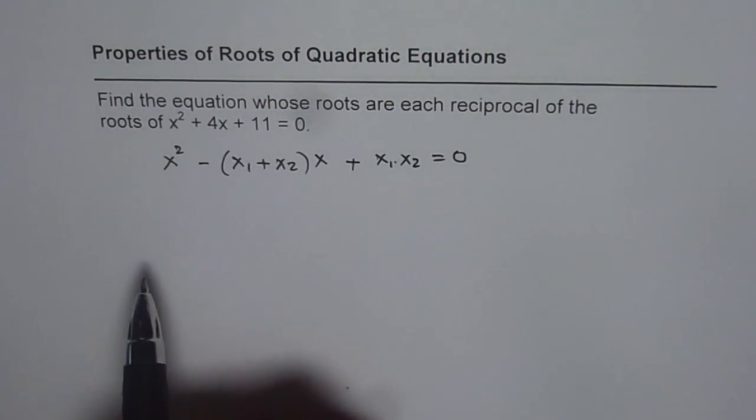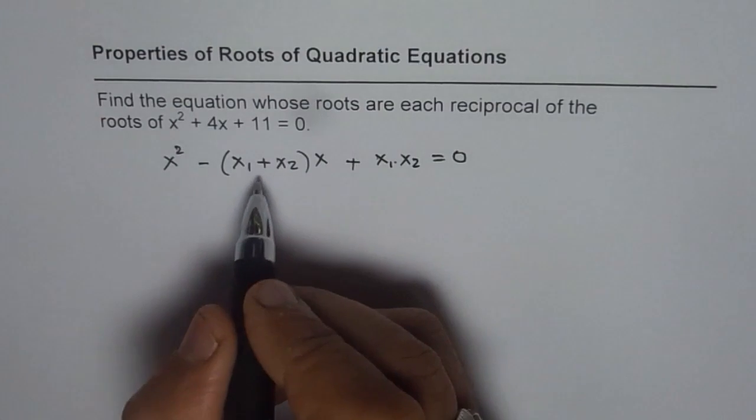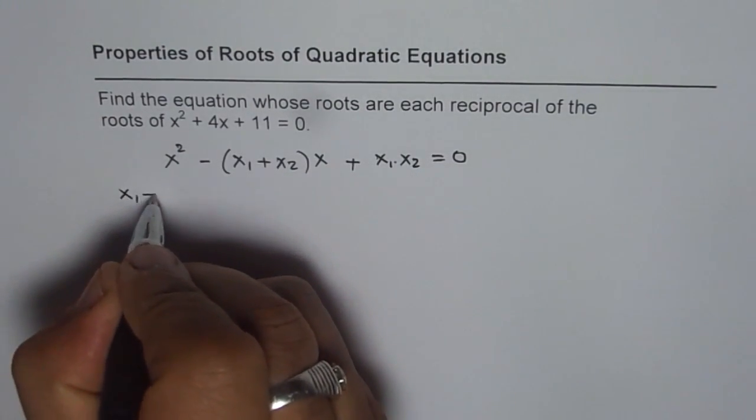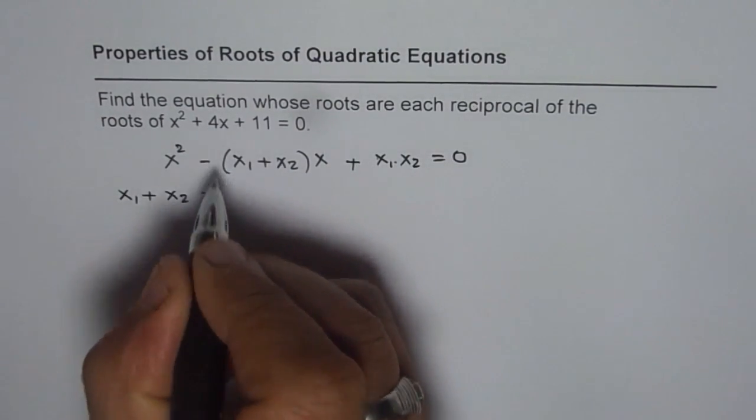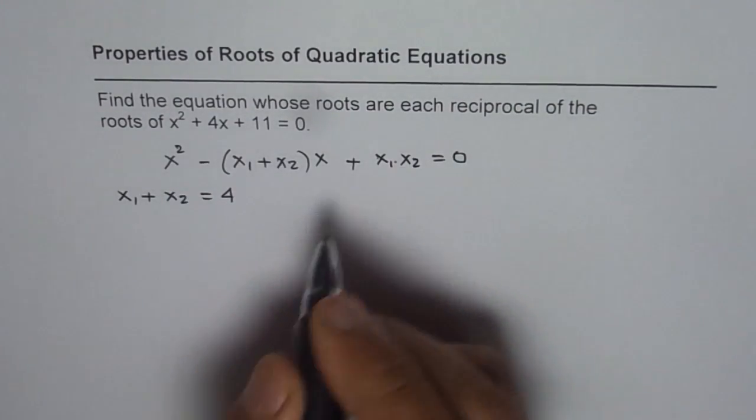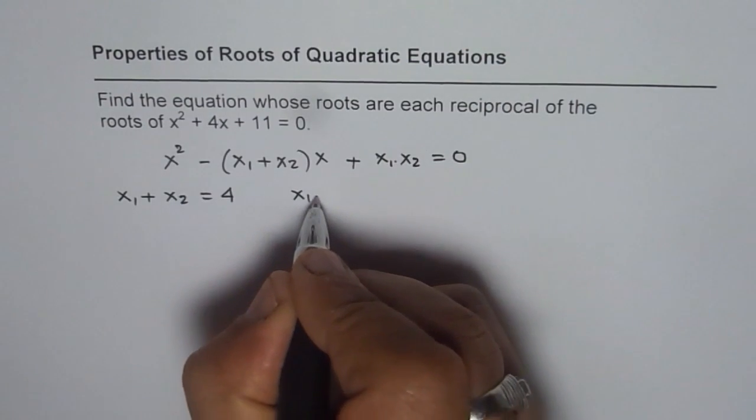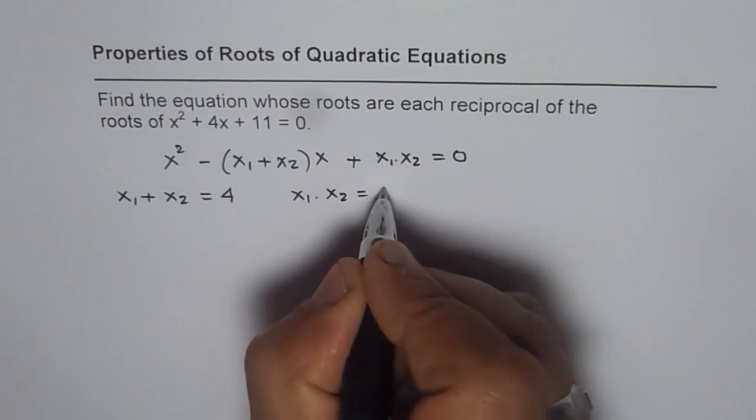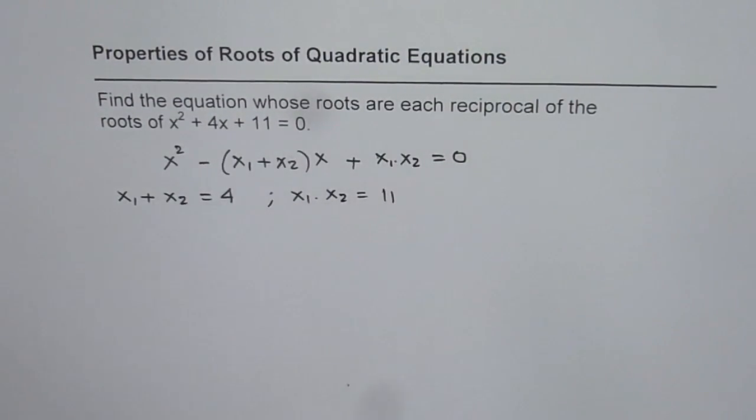Now if you compare this with the given quadratic function, you can say that x₁ + x₂, the sum of roots, is equal to 4, and the product x₁x₂ is equal to 11. So that comes straight away.